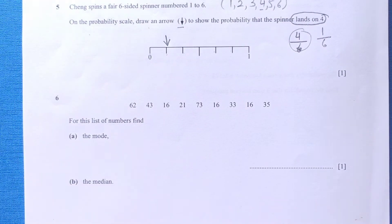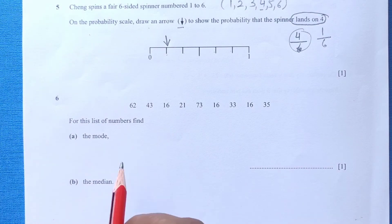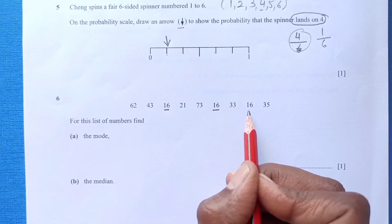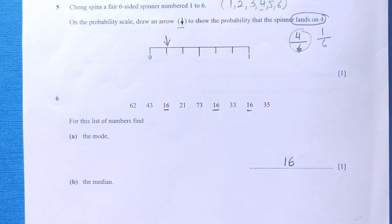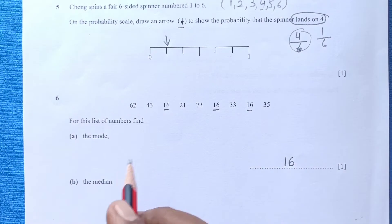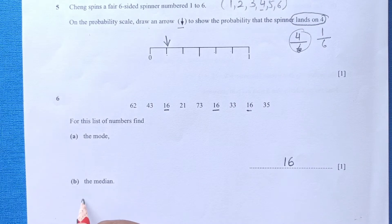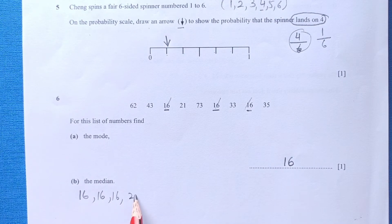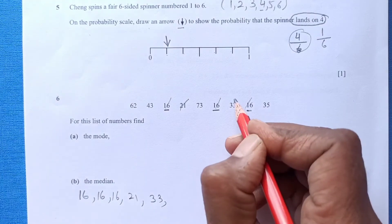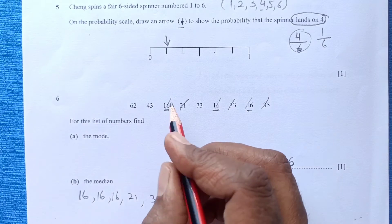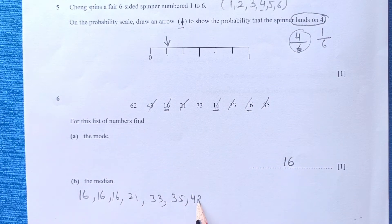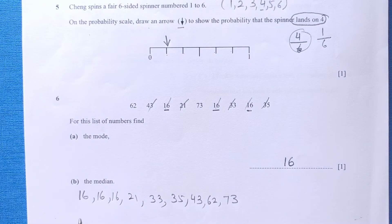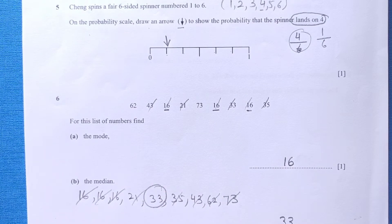Number 6: You can see some numbers here. For this list of numbers, find the mode. The mode is the number that occurs maximum number of times. If you look here, 16 is coming 3 times, so 16 will be the mode. And the median: for the median, we have to rearrange them and find the middle value. First we have 16, 16, 16, there are 3 sixteens. Then we have 21, after that 33, then 35, then 43, 62 and 73. We are looking for the middle number: 1, 2, 3, 1, 2, 3, 1 and 1. So we are left with 33. So 33 is the median.